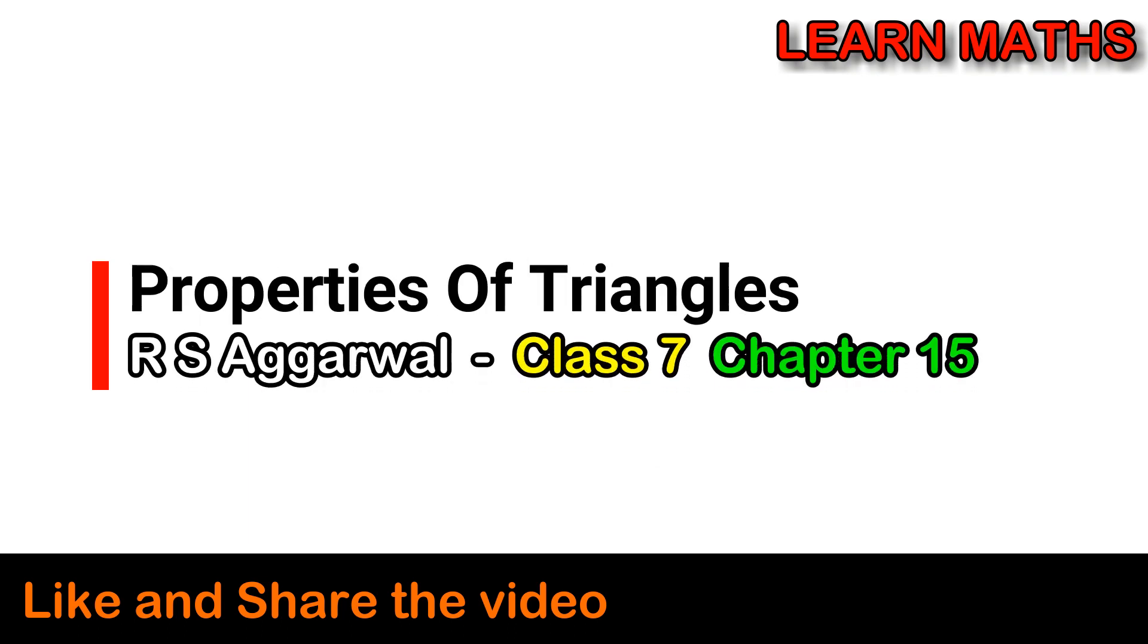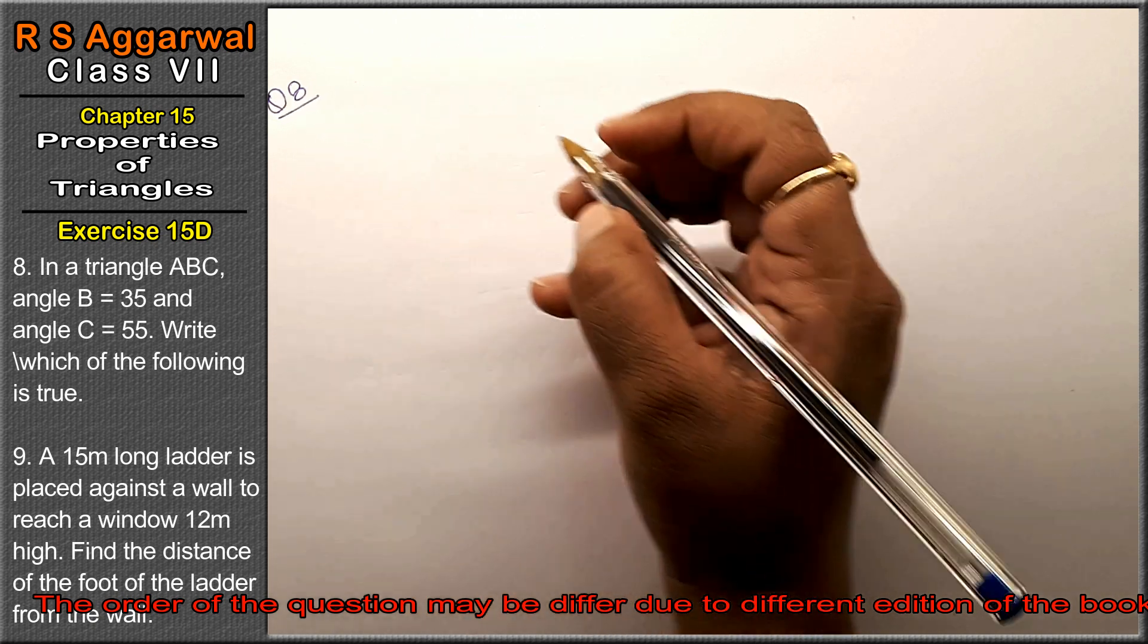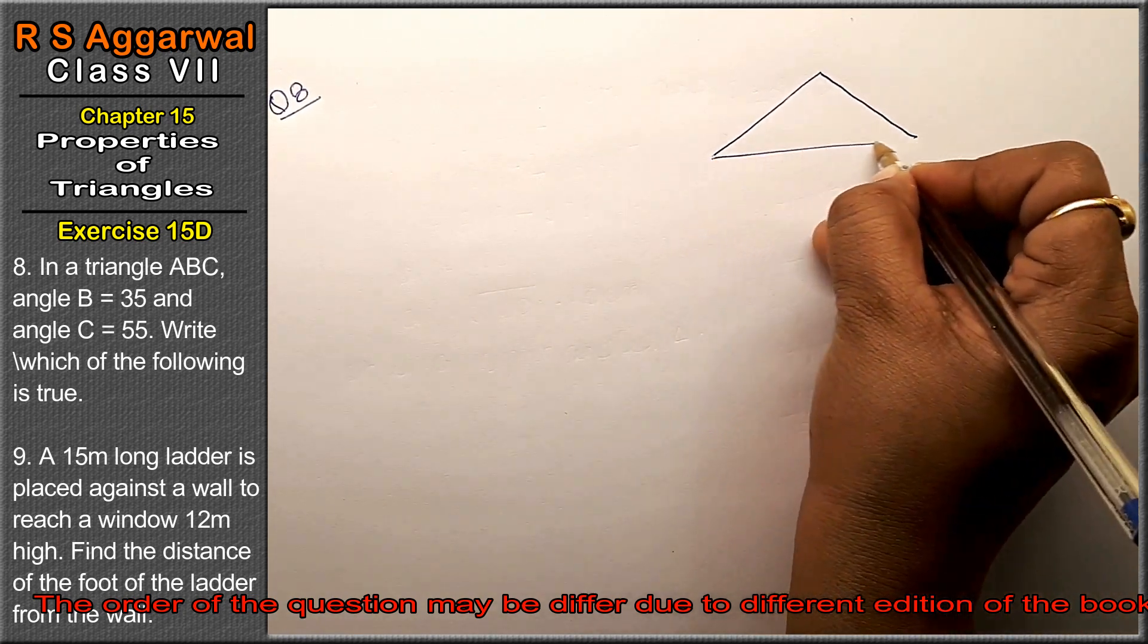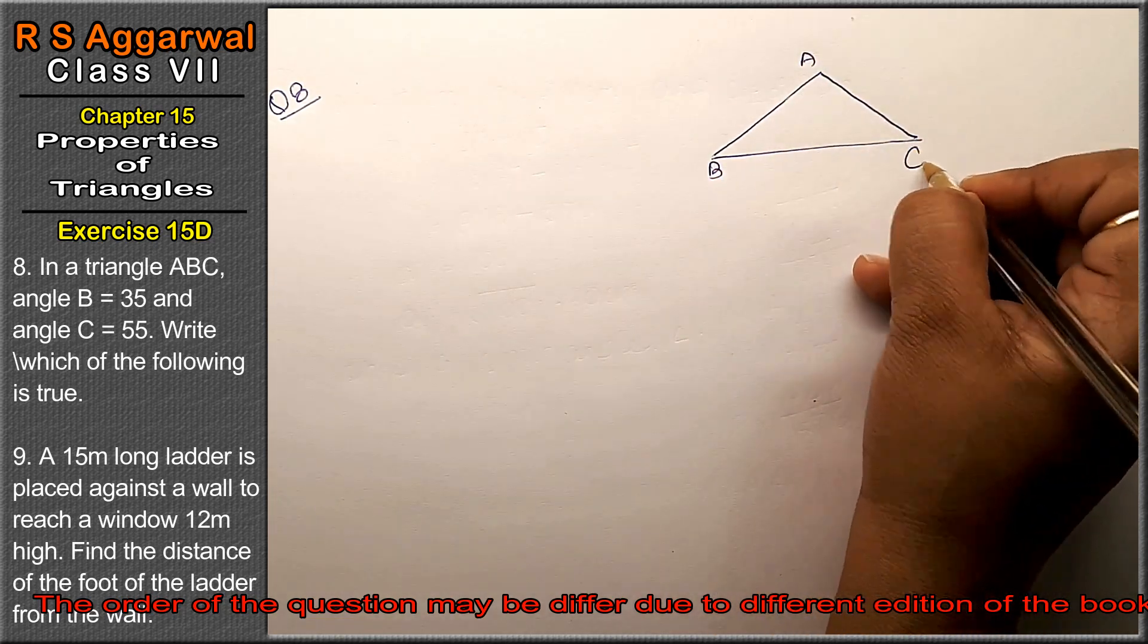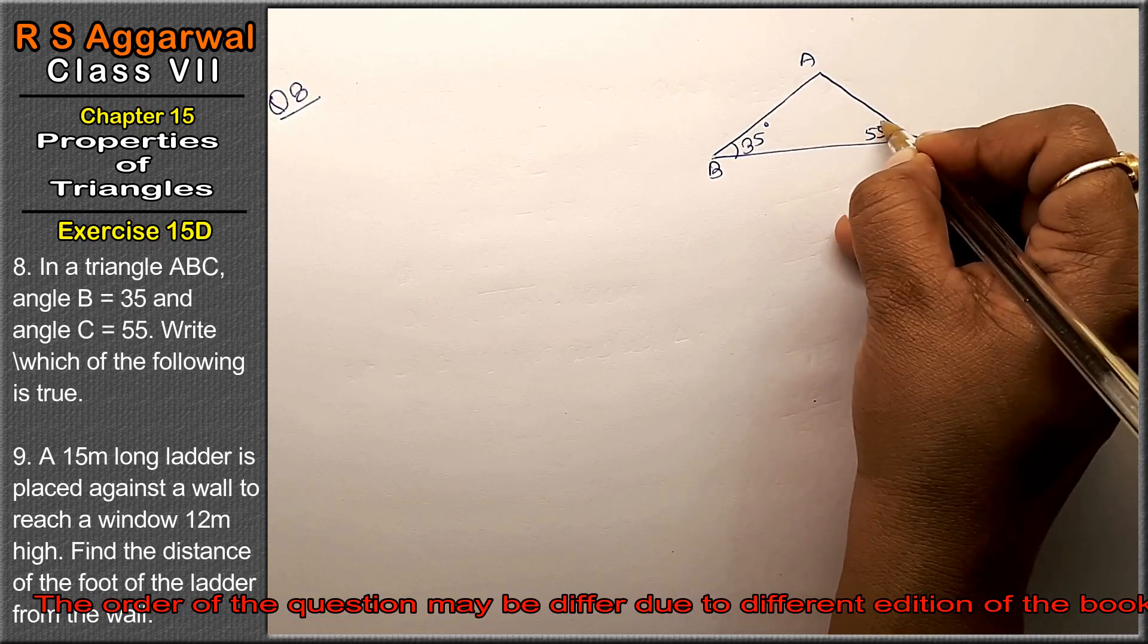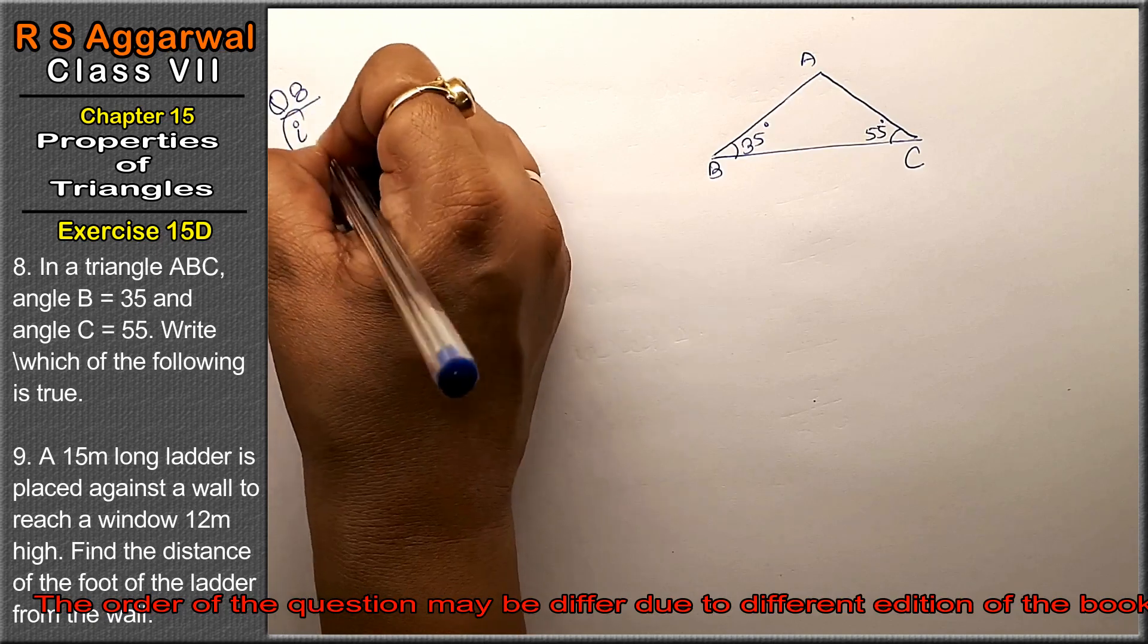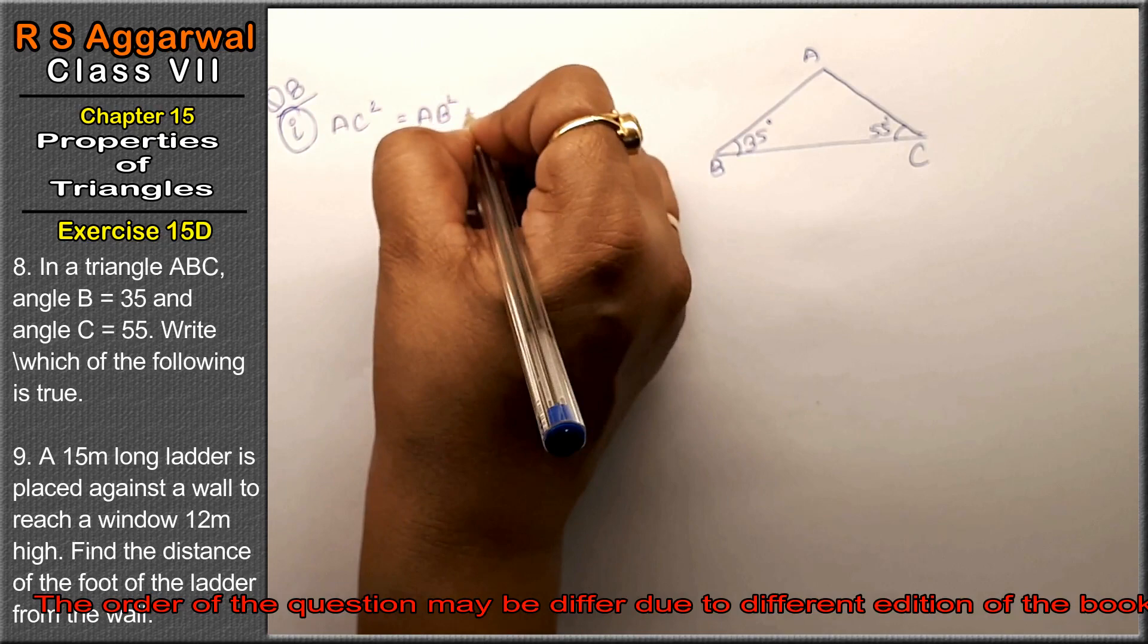Let's do question number 8 of exercise 15D, Properties of Triangles. Question 8: In triangle ABC, angle B is 35 degrees and angle C is 55 degrees. Which of the following is true? First part is AC² = AB² + BC².